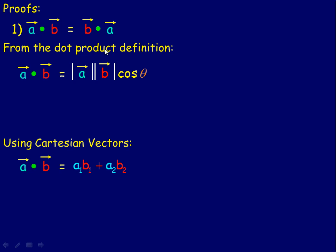I'm actually going to do two different proofs of this, one with each of the versions of the dot product formula. From the definition of the dot product, a dot b equals magnitude of a times magnitude of b times the cosine of the angle.